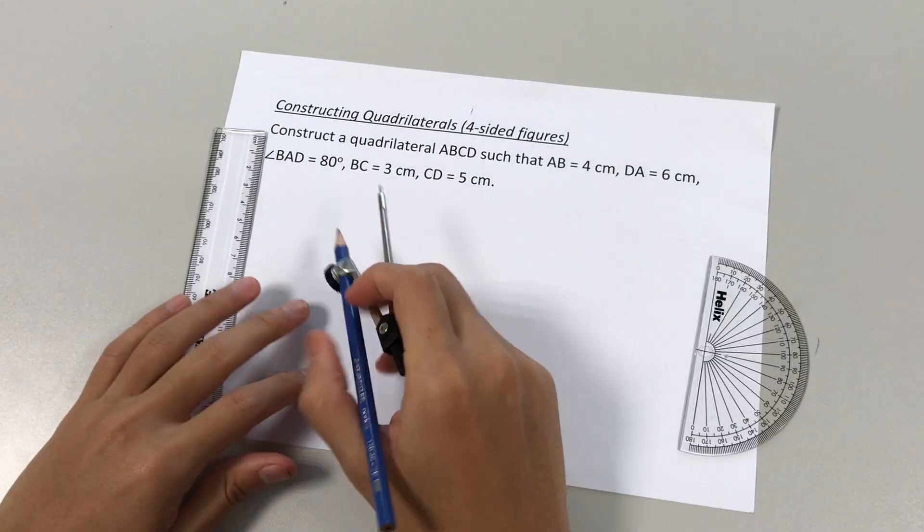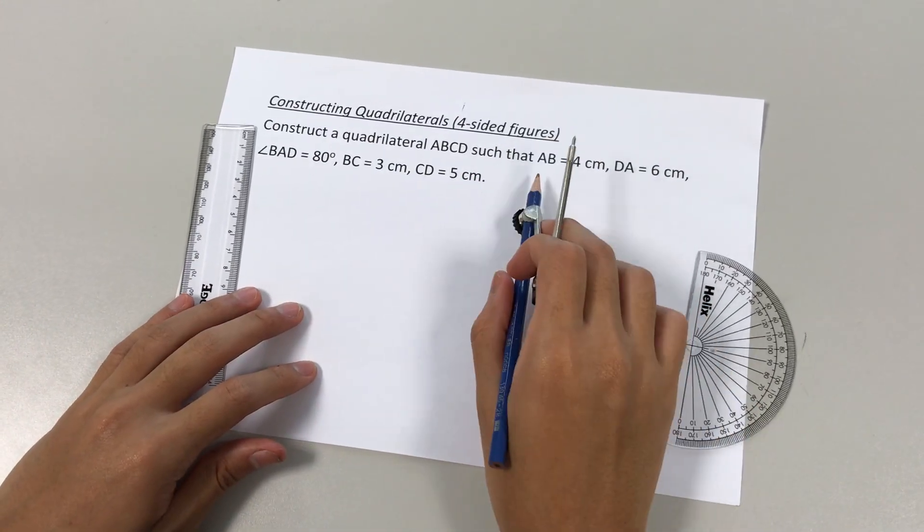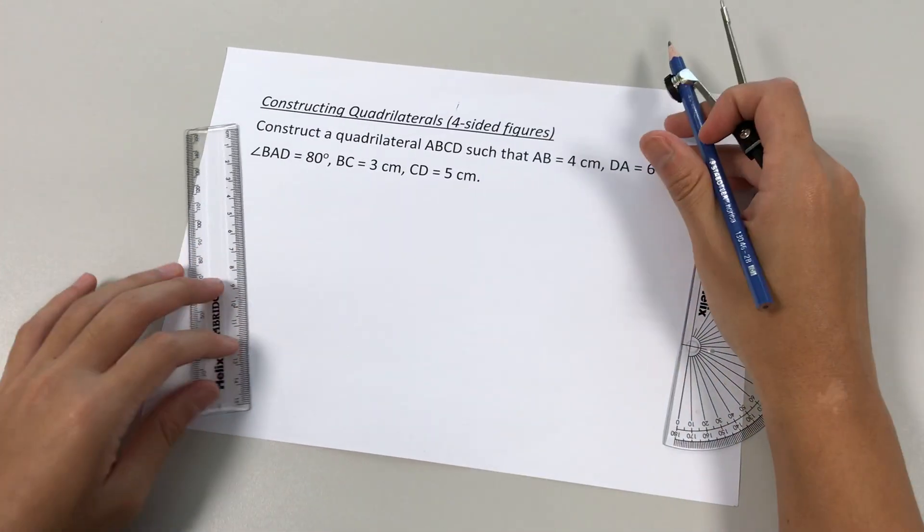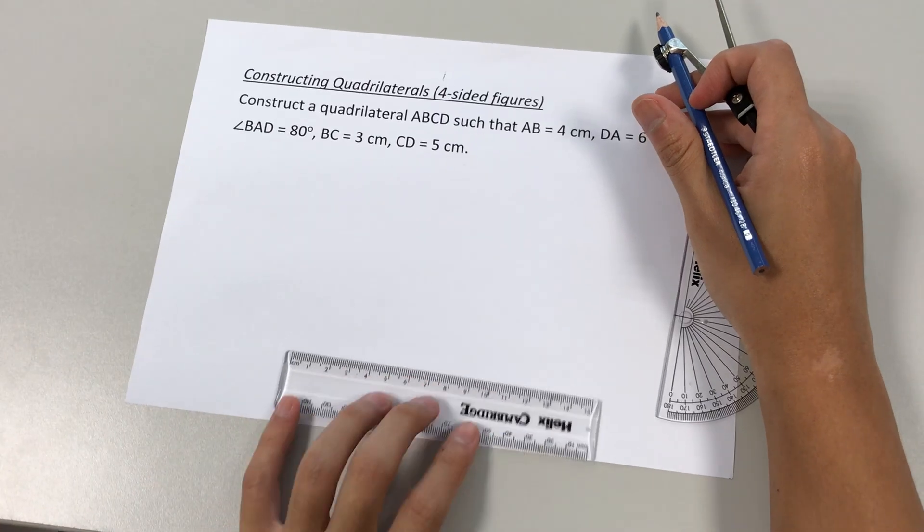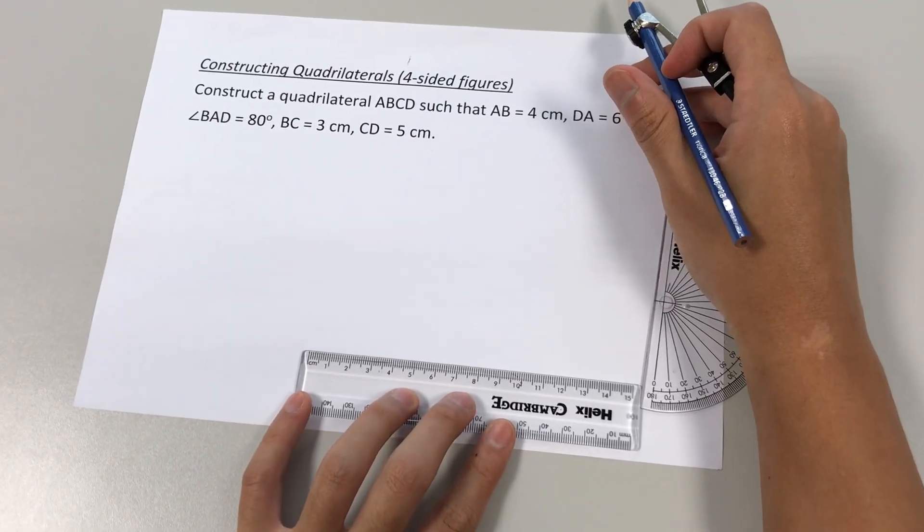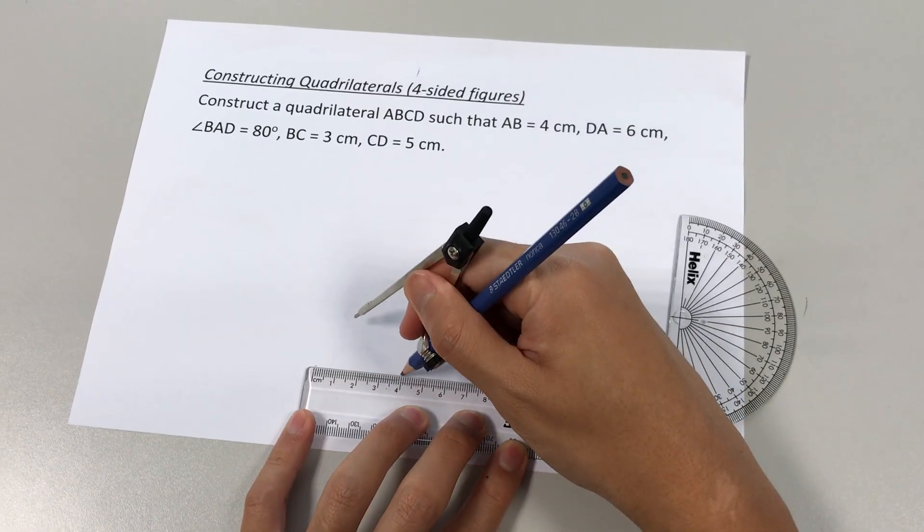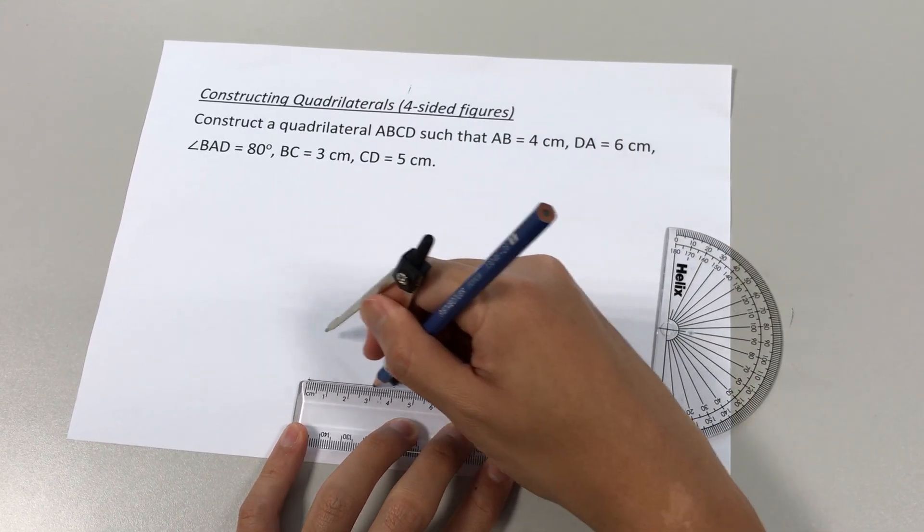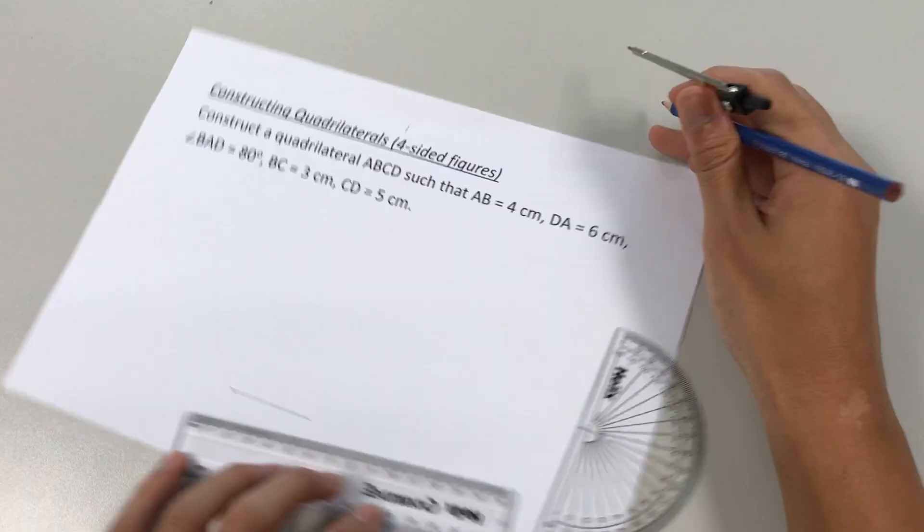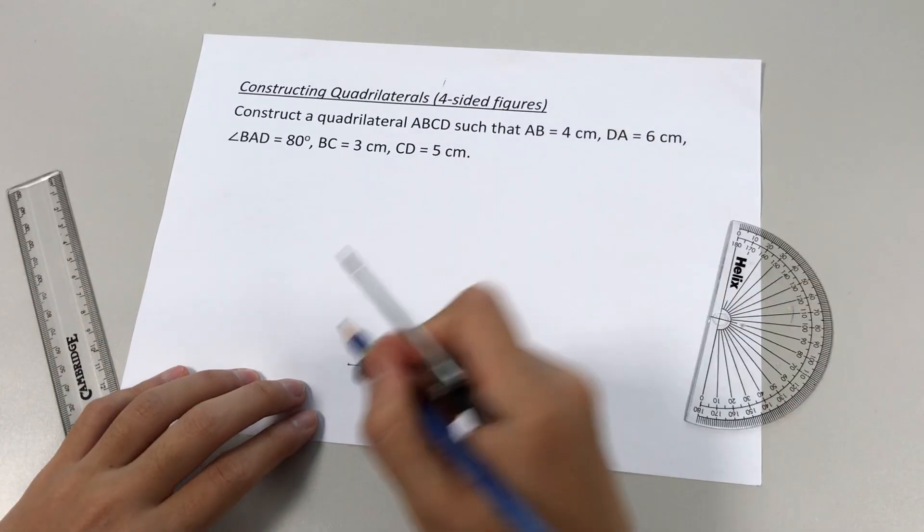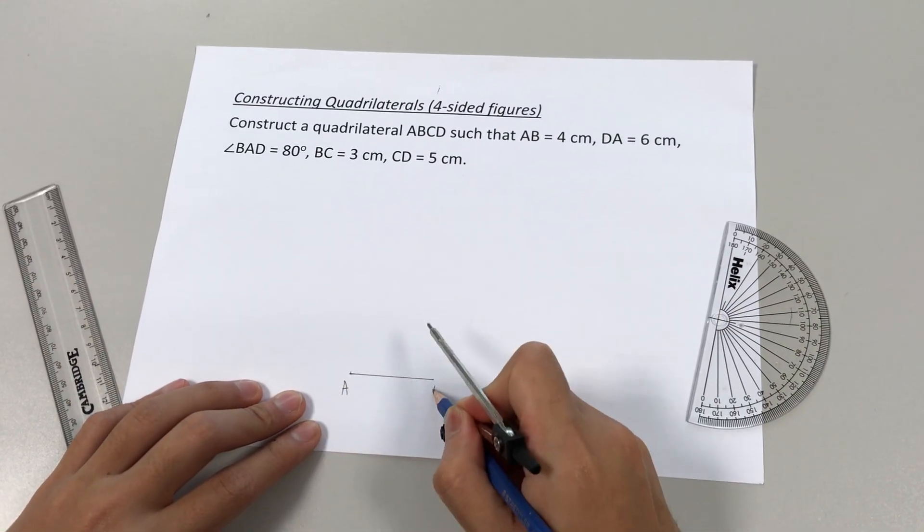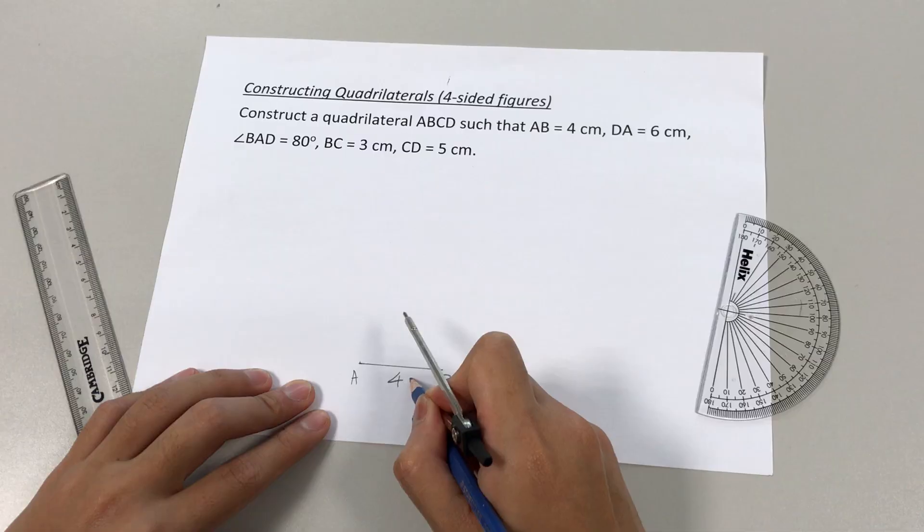Now in order to construct quadrilateral ABCD, we have to first construct line AB, which is four centimeters. So we'll start right at the bottom of the page. Mark out a four-centimeter line. Join it. Okay, we'll label it AB. Four centimeters.